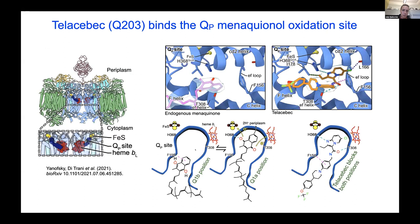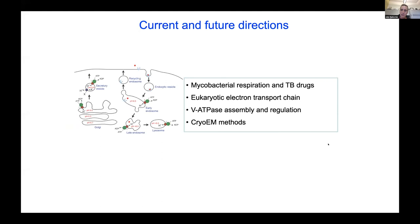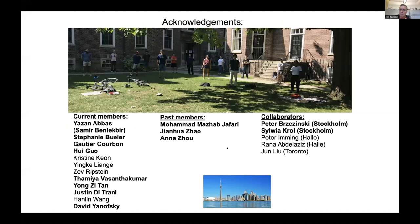There are lots of interesting directions in the lab. We'll continue to look at mycobacterial respiration and TB drugs, the eukaryotic electron transport chain, and vacuolar ATPase assembly and regulation, with cryo-EM method development underlying all of these activities. The group is larger than usual but many people are leaving for postdocs, faculty positions, med school, and law school, so there are positions available for anyone interested in joining. I'll stop there and be happy to take questions.